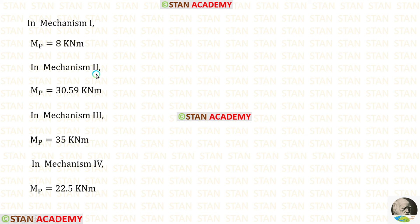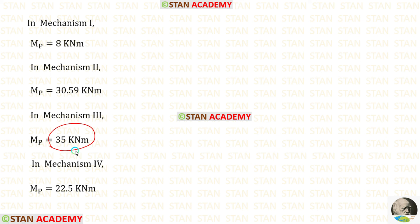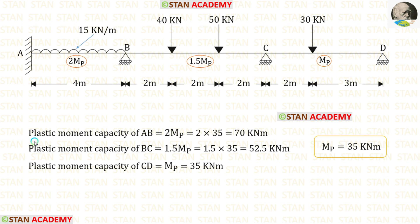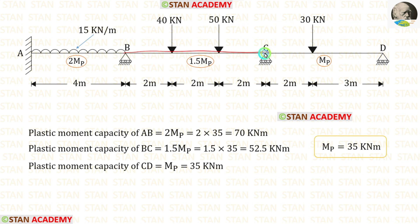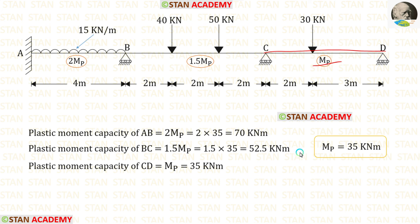We have calculated MB four times — in the first, second, third, and fourth mechanisms. Out of these four values, we select the maximum value, which is 35 kNm. The plastic moment capacity of span AB is 2 MB = 2 × 35 = 70 kNm. For span BC it is 1.5 MB = 1.5 × 35 = 52.5 kNm. For span CD the plastic moment capacity is MB = 35 kNm.